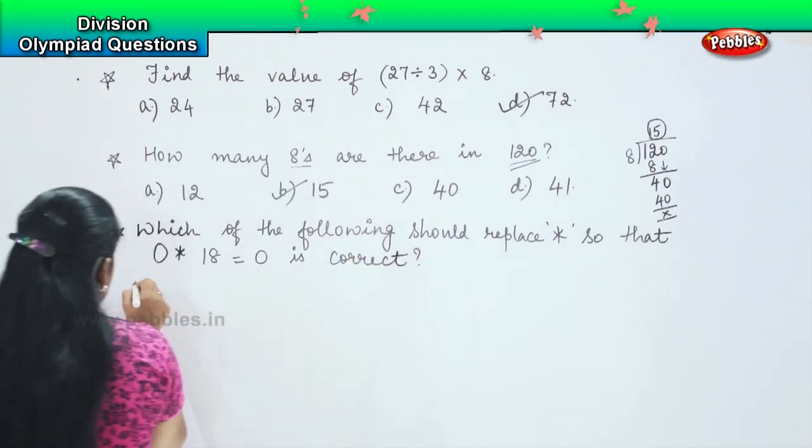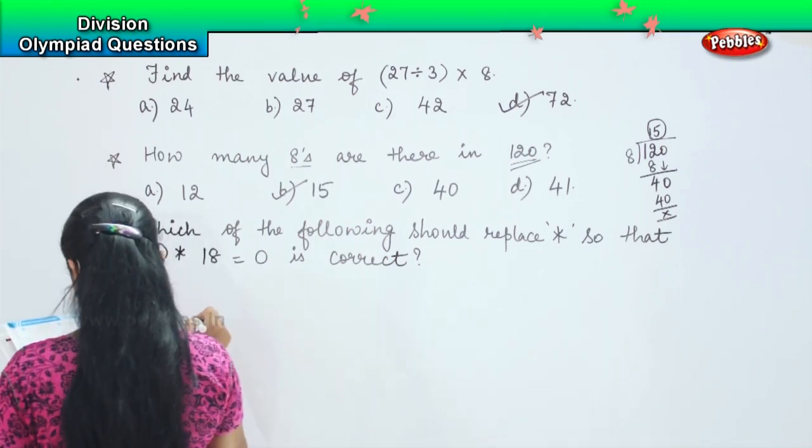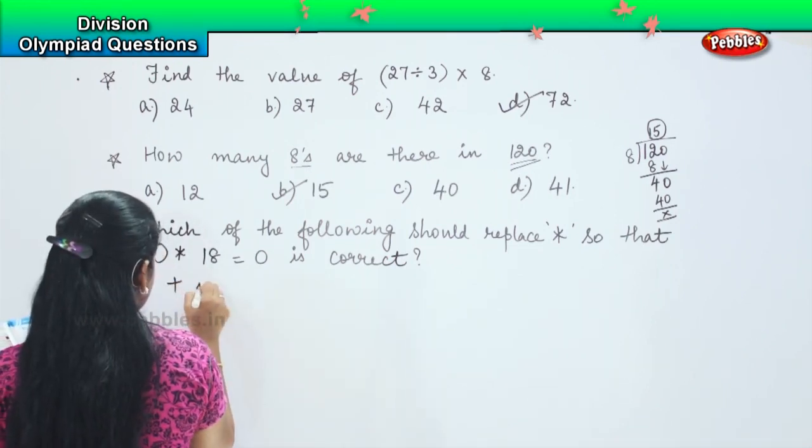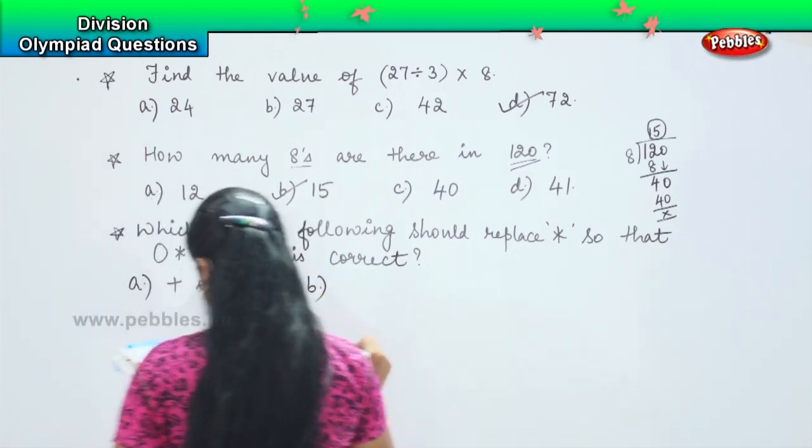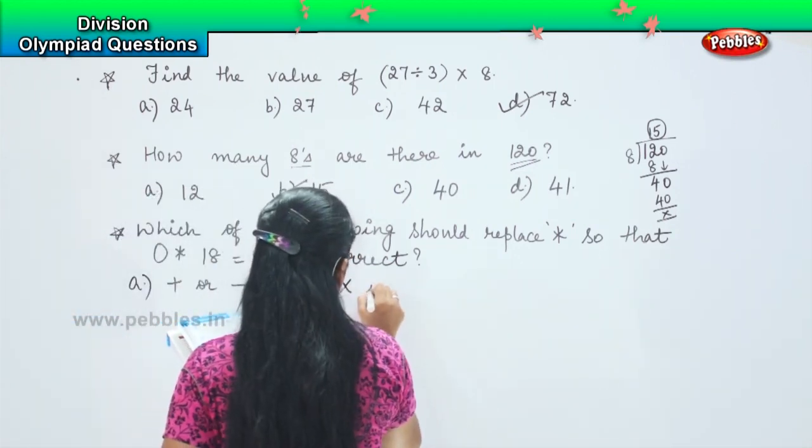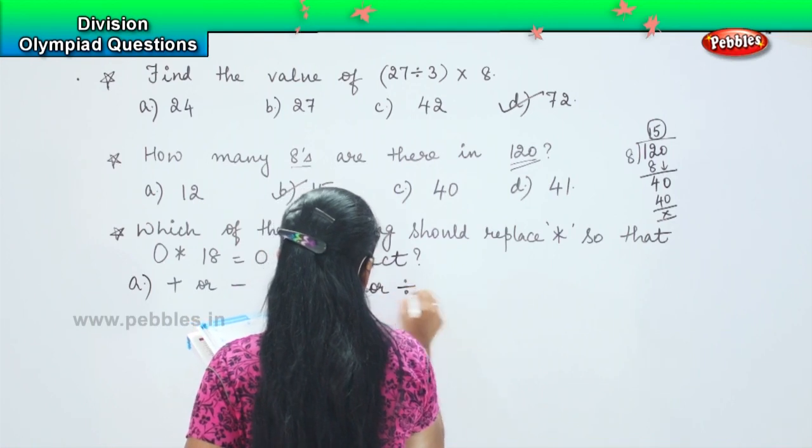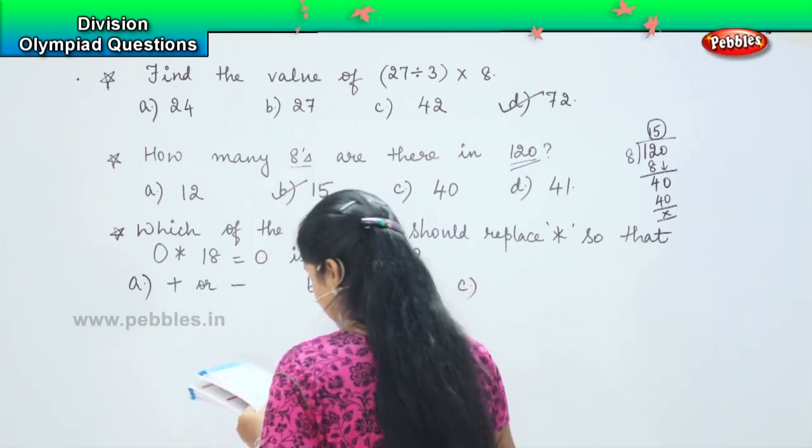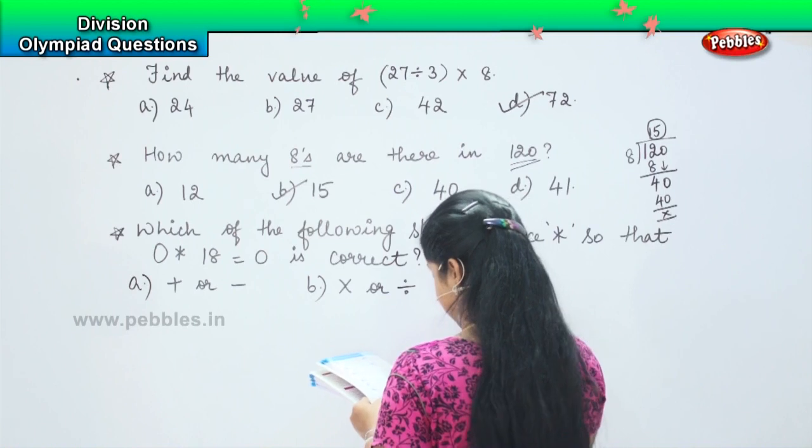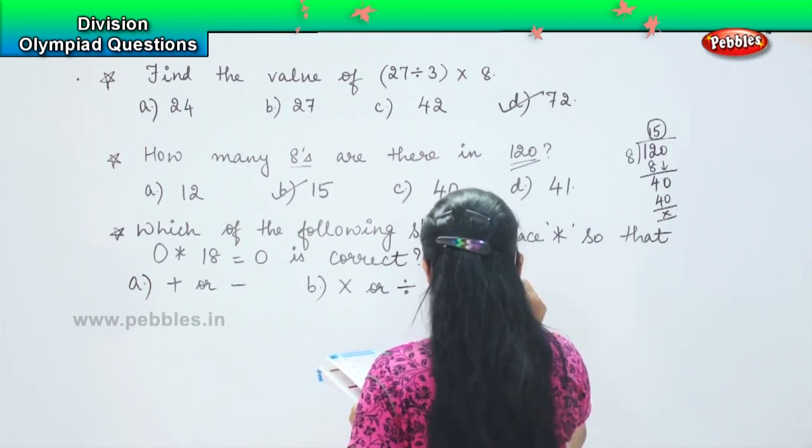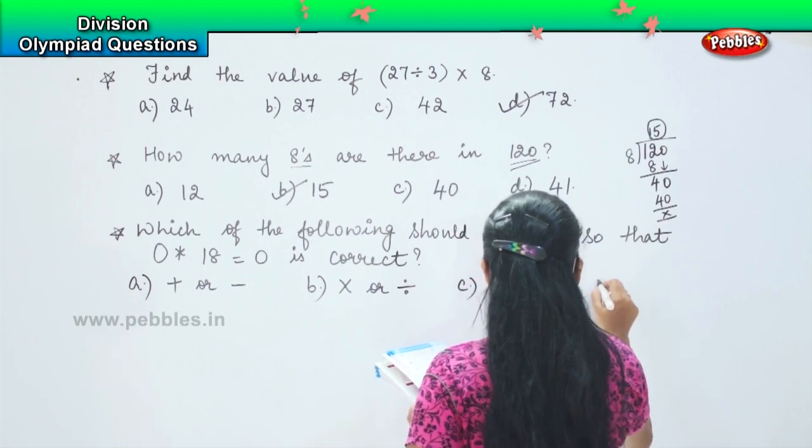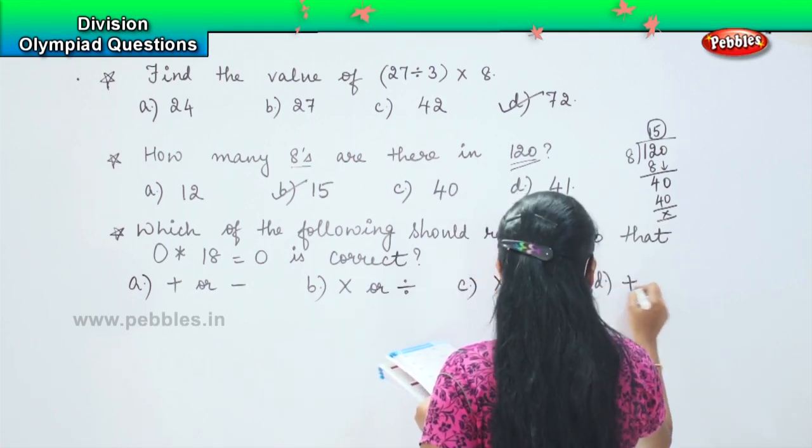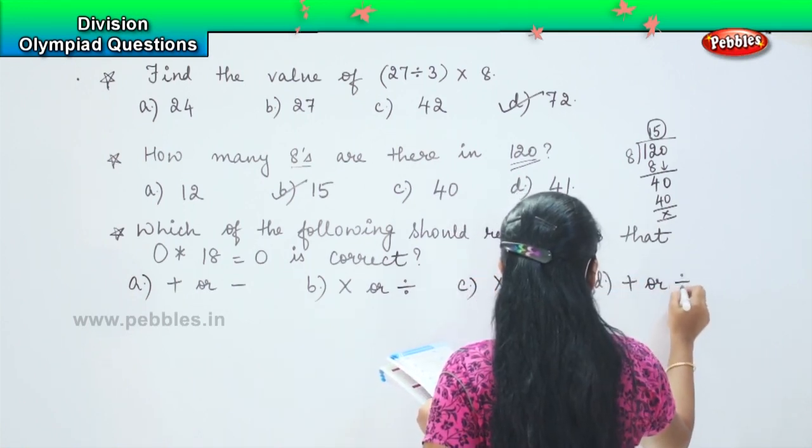And the options are plus or minus option B, option C into or division, option C into or plus, option D plus or division.